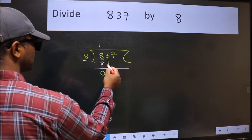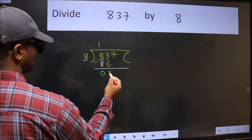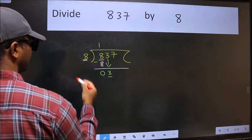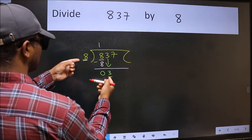After this, bring down the next number. 3 down. Now here we have 3 and here 8. 3 is smaller than 8.